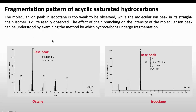We will now discuss two more examples: octane and isooctane for saturated hydrocarbons. The molecular ion peak in isooctane is very rarely observed, while the molecular ion peak in the straight-chain isomer (octane) is more commonly observed. The effect of chain branching on molecular ion peak intensity can be understood by the same reasoning as isobutane: fragmentation of the isooctane molecular ion gives secondary or tertiary carbocations that fragment further, resulting in low molecular ion intensity.